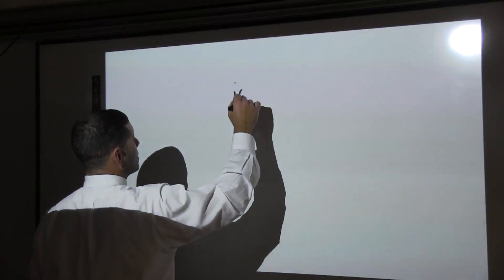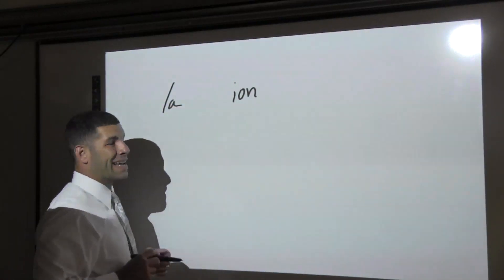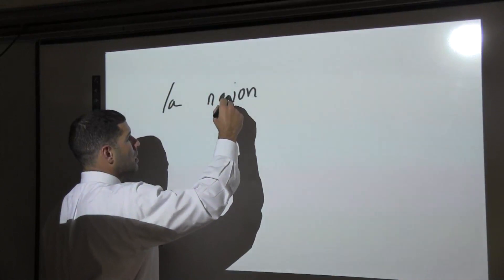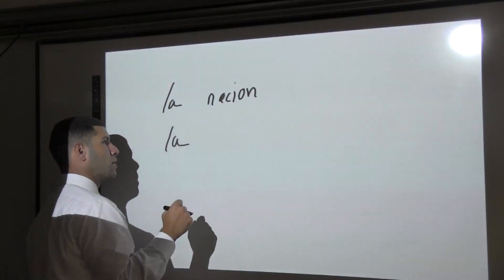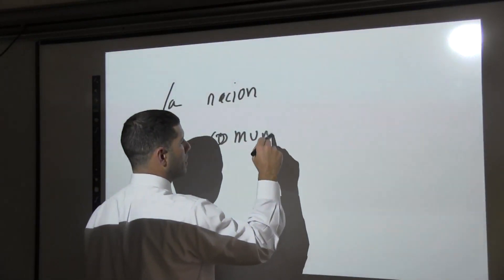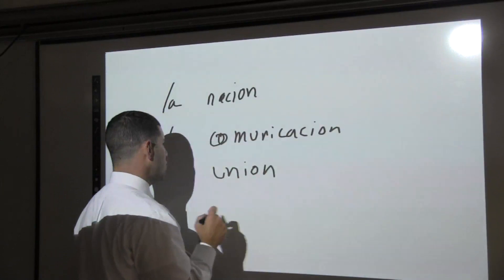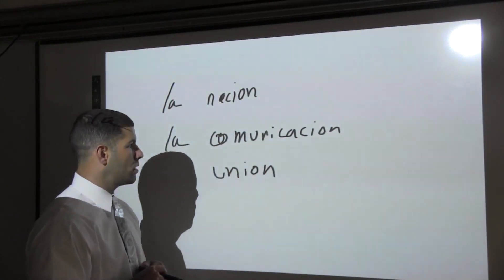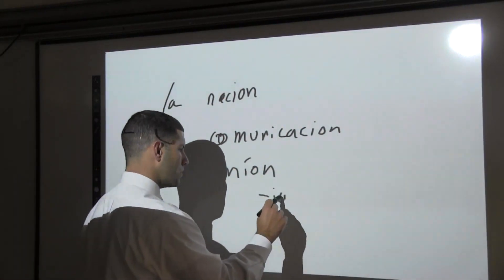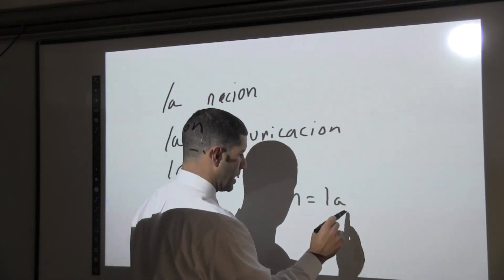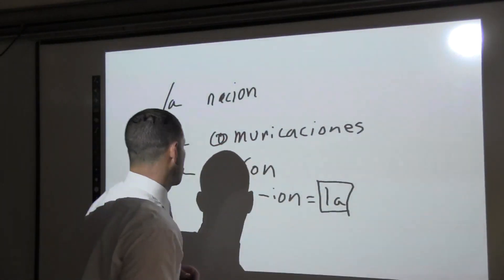Another trick: most nouns that end in -ión are feminine — and these are usually cognates, meaning they sound like English words. Por ejemplo, la nación (nation), la comunicación (communication), la unión (union). These all have accent marks on the -ón. Most of the time, -ión means la — feminine. And you would pluralize these, again, with -es: las naciones, las unidades.